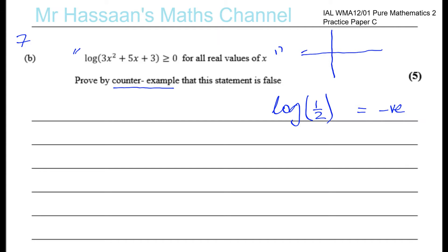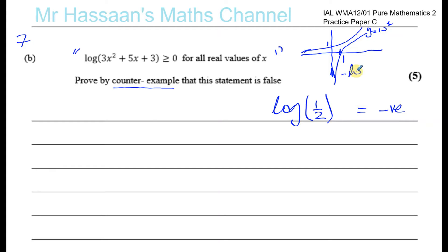For example, the curve y = 10 to the power of x has a particular shape and always goes through (0, 1). The log curve is the inverse of this, so the x and y axes swap over. The log curve comes from negative on the y axis and crosses the x axis at 1. So y = log base 10 of x is the inverse of y = 10 to the power of x.